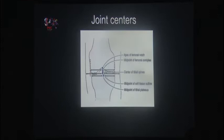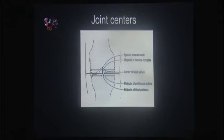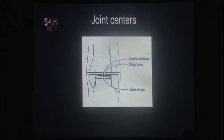The distal joint center of the femur is somewhere in the middle of the knee. There are various methods — you can use the skin mantle, the intercondylar notch roof, or the outer margin of the condyles. The key point is that all these reference points align roughly in the middle, so just pick one and stick to it. Personally, I use the roof of the notch on an AP image. For the proximal tibial joint center, I use the midpoint between the two spines.